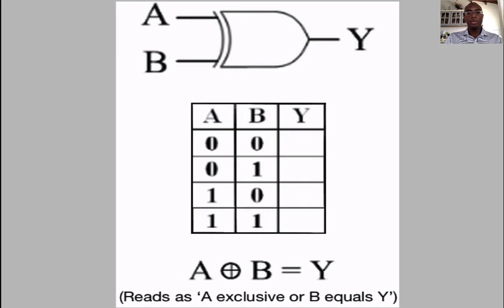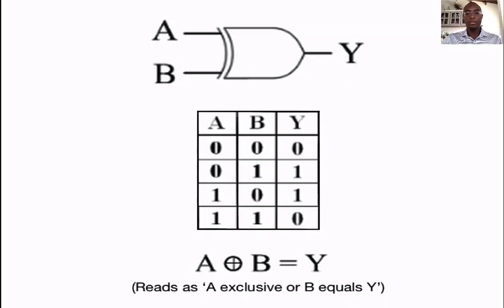So this is the symbol for the XOR gate. And as follows, if you have an input of 0 for A and an input of 0 for B, your output should also be 0. If you have an input of 0 for A and an input of 1 for B, your output will be 1. Likewise, your output will be 1 for the third column as well. For the last column, your output will be 0 because you have 1 and 1 as your inputs. This is an XOR gate.